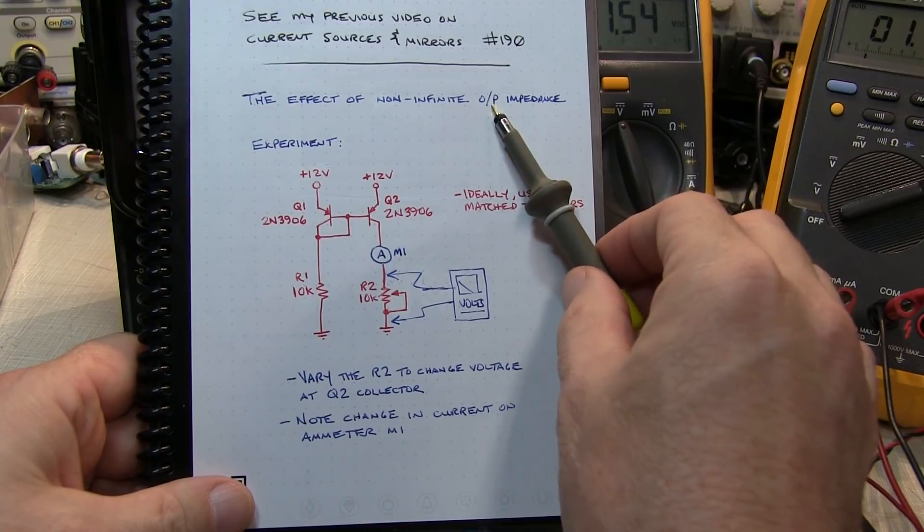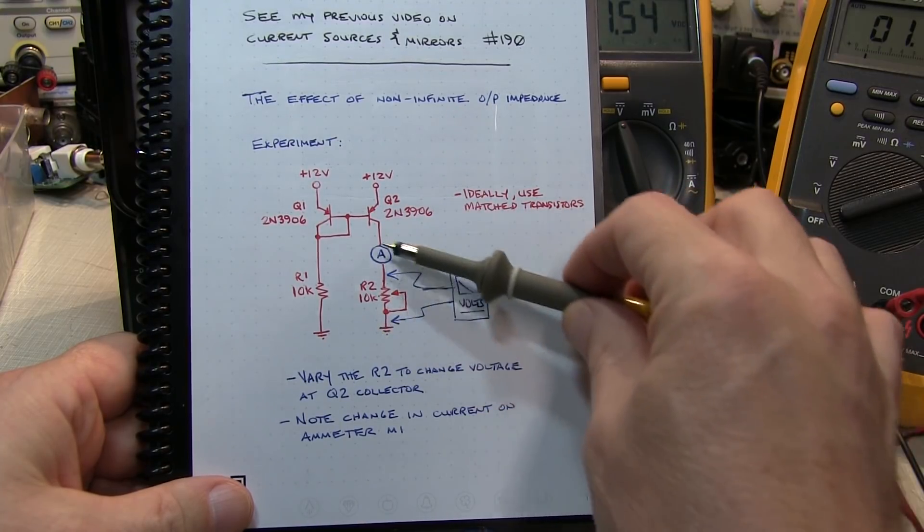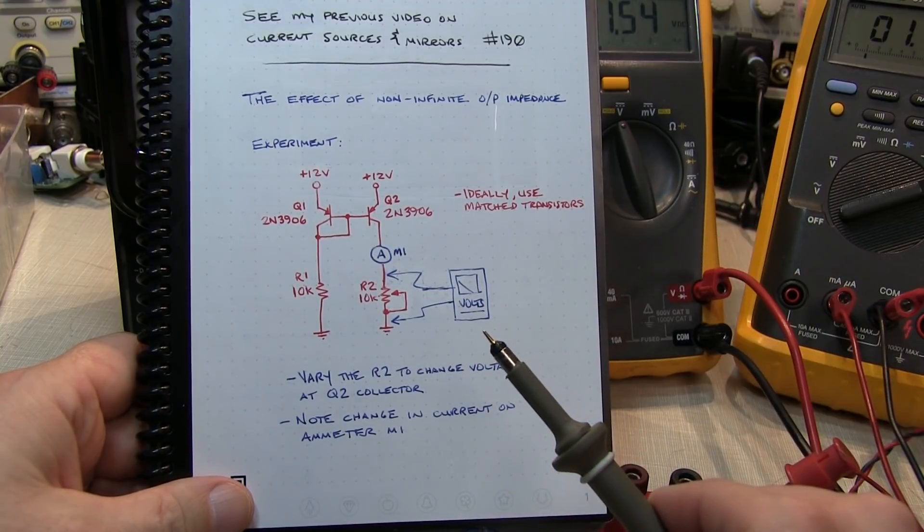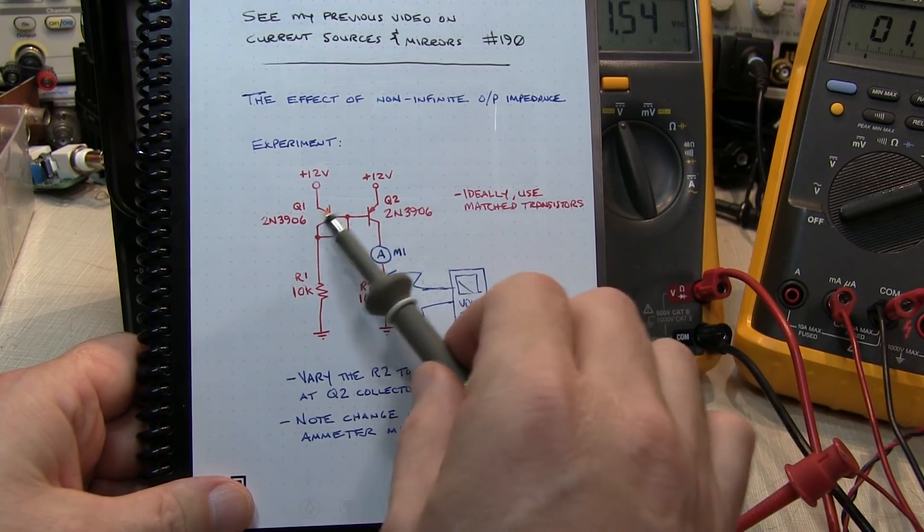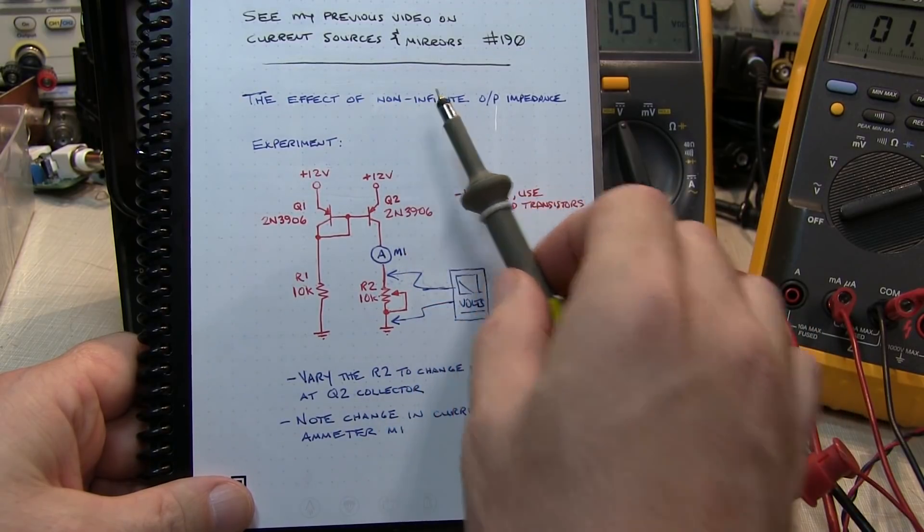Now an ideal current source would have an infinite output impedance, meaning that the current would not change regardless of the load that the current source is driving. Of course, bipolar transistor current sources are not ideal and will have a non-infinite output impedance.